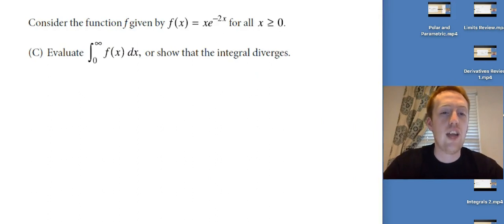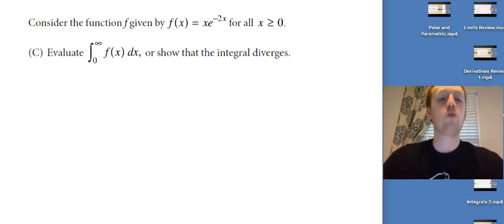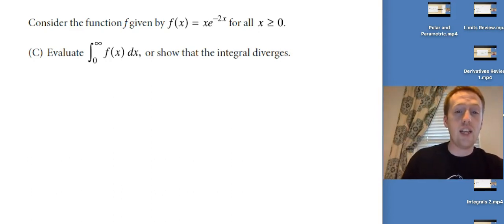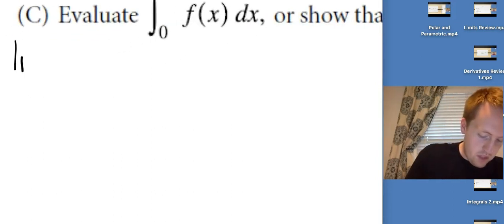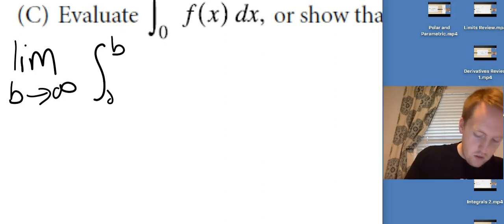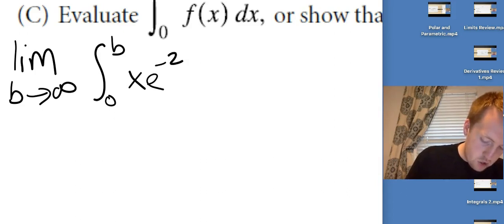Alright, first one. Consider the function f given by f(x) = x*e^(-2x) for all x greater than or equal to 0. We want to evaluate the integral from 0 to infinity or show that the integral diverges. So just like we were looking back on that DETAIL thing, I'm going to choose e^(-2x) to be my dv. So first, let me rewrite this. This should be the limit as b goes to infinity, 0 to b, x*e^(-2x) dx.